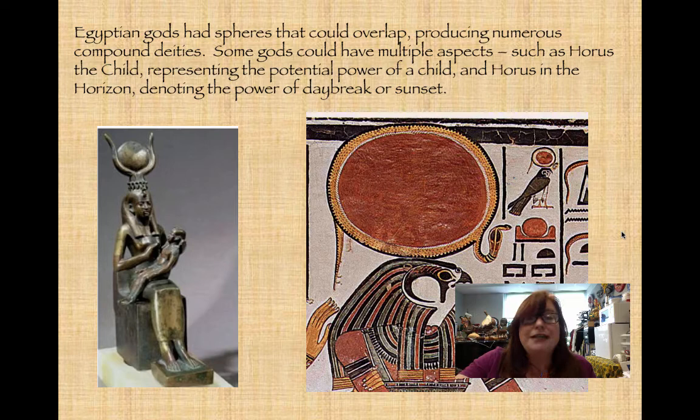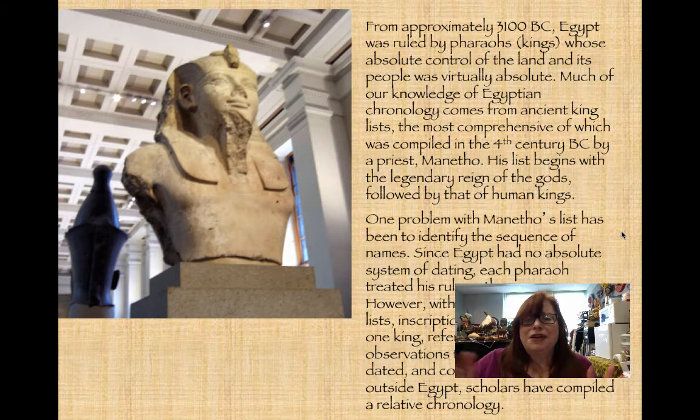Egyptian gods had spheres that could overlap, and they often created compound deities. Some gods could have multiple aspects — like Horus the child, representing the potential power of a child, and Horus in the horizon, denoting the power of daybreak or sunset. I'll let you read the chronology of ancient Egypt on your own.